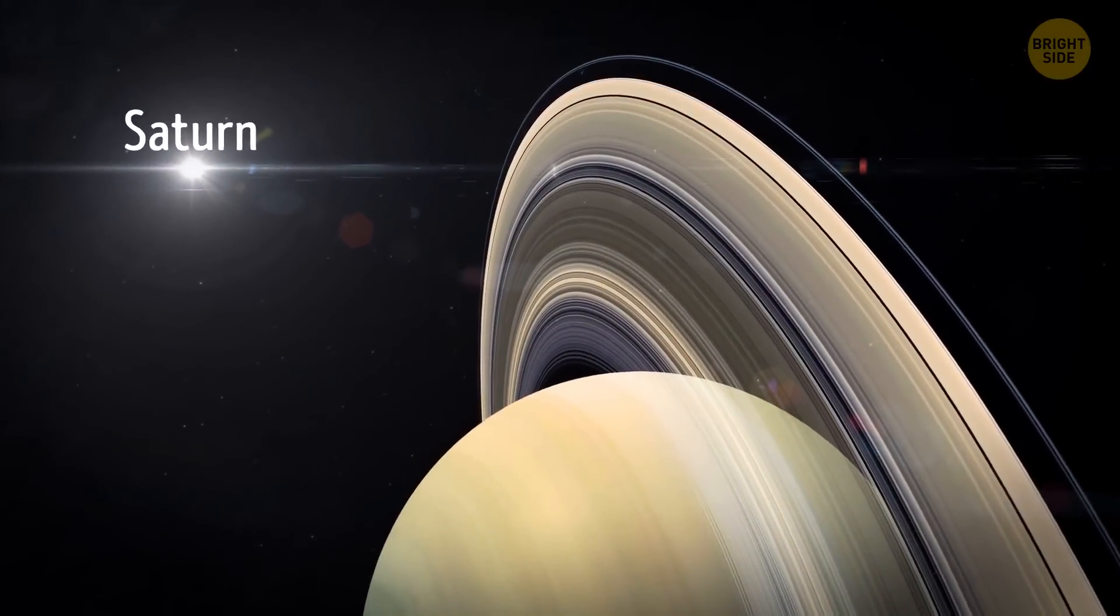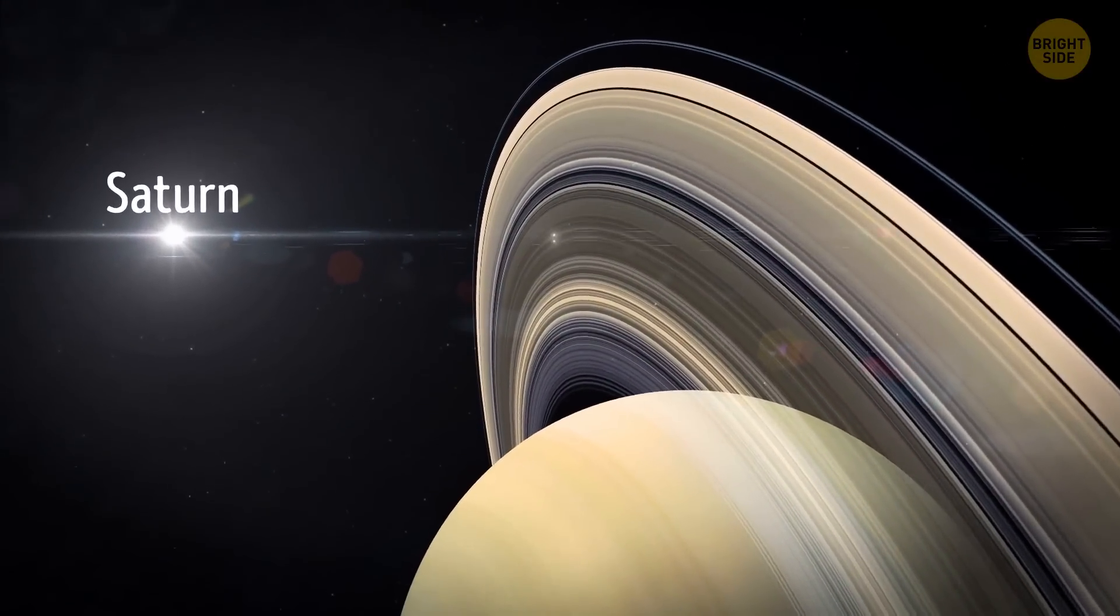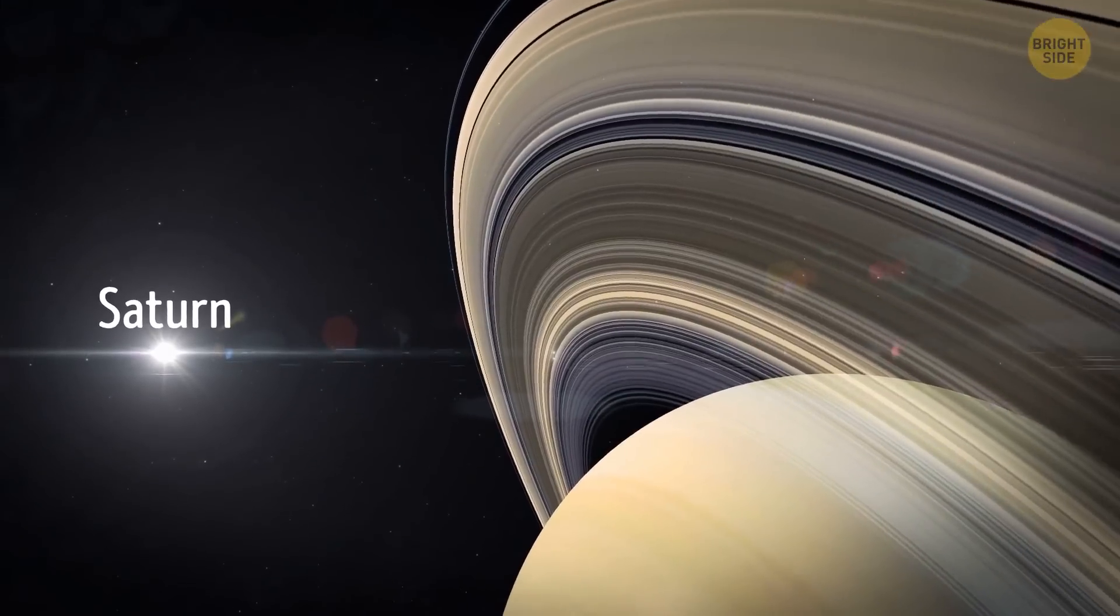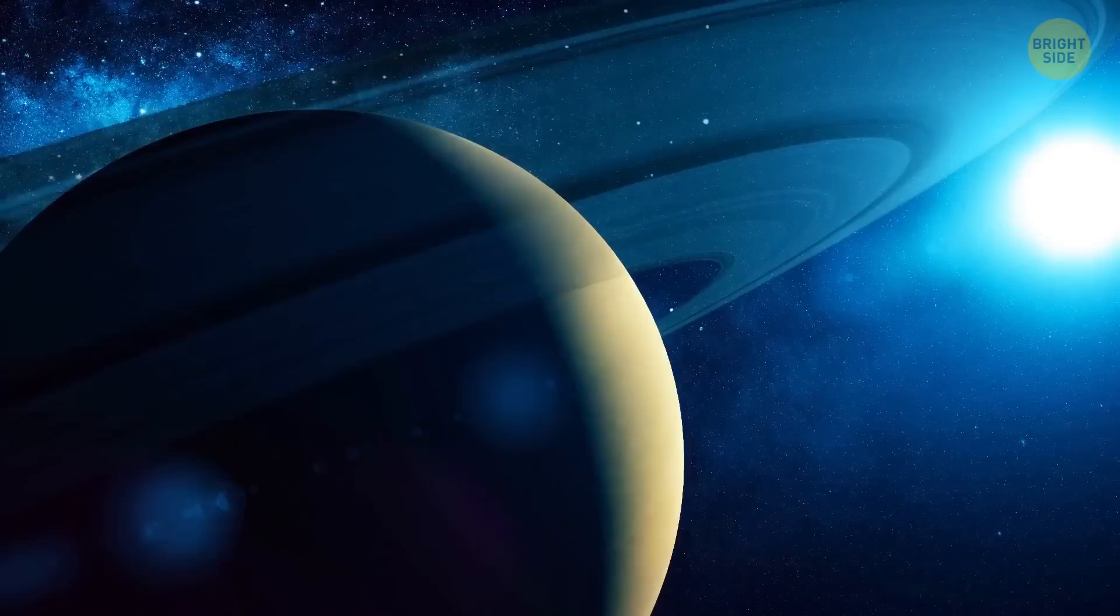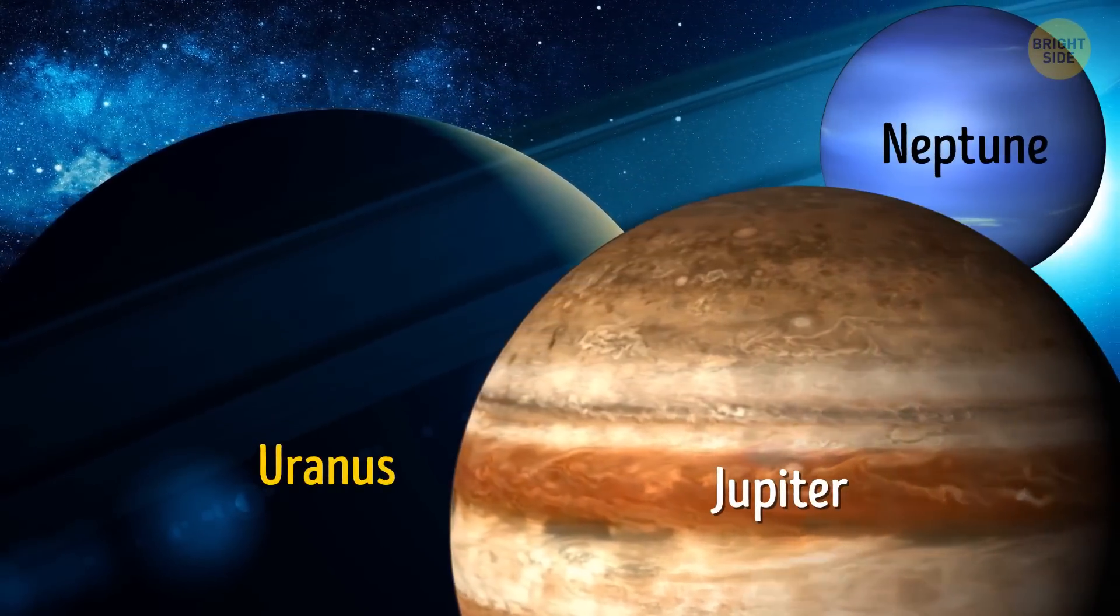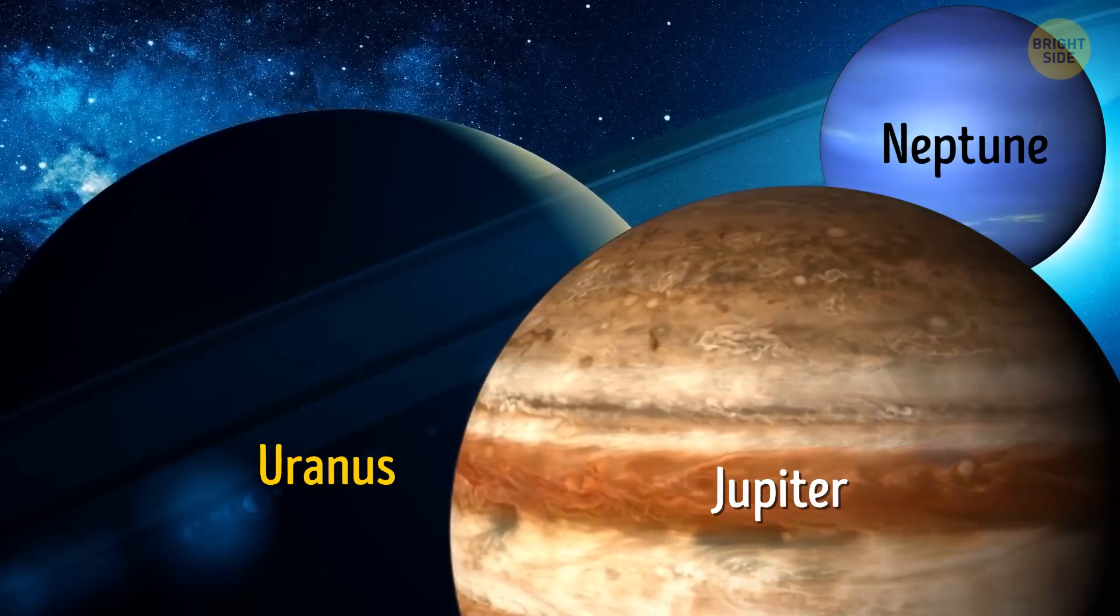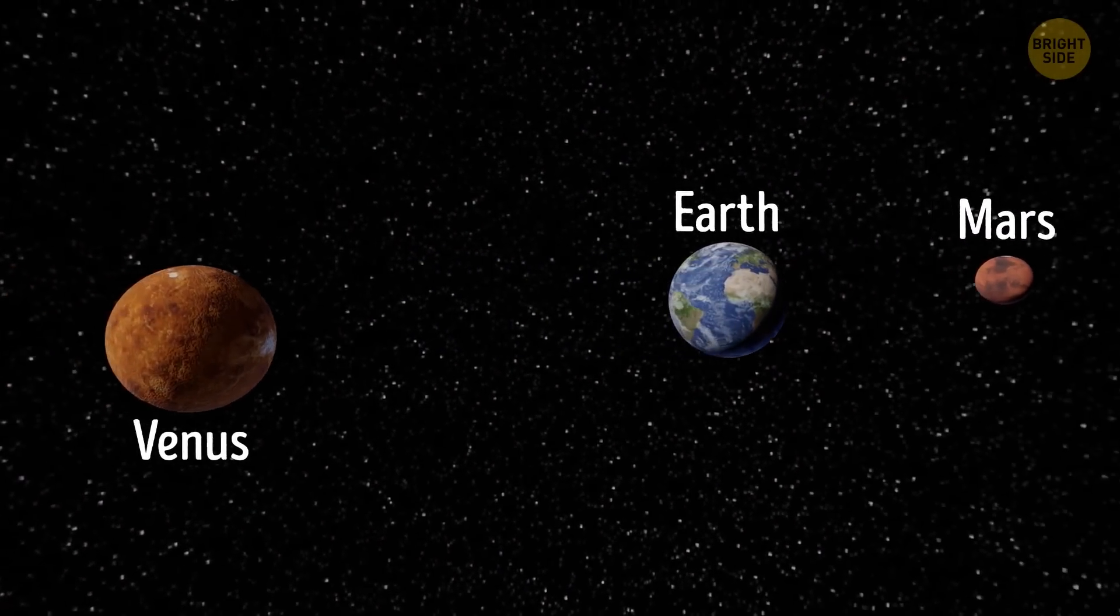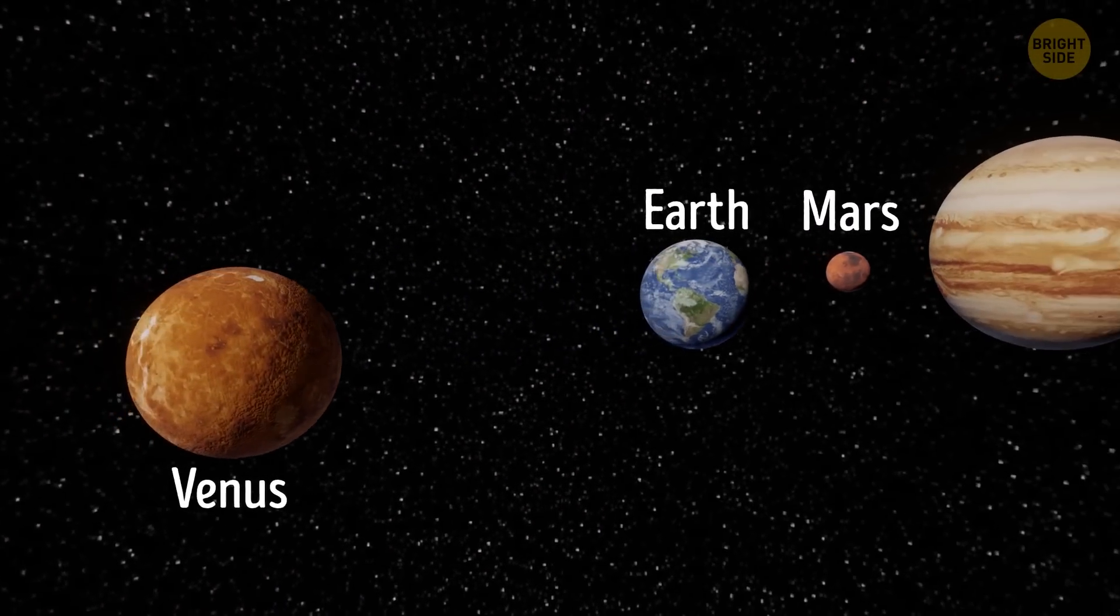People came to know about Saturn's beautiful rings in the 1600s. But only recently it became apparent that Saturn isn't the only ringed planet. All the gas giant planets – Uranus, Neptune, and Jupiter – have rings of their own, but they're thin and almost impossible to see. As for Mars, Venus, and Earth, they're made of rocky materials and have no rings whatsoever.